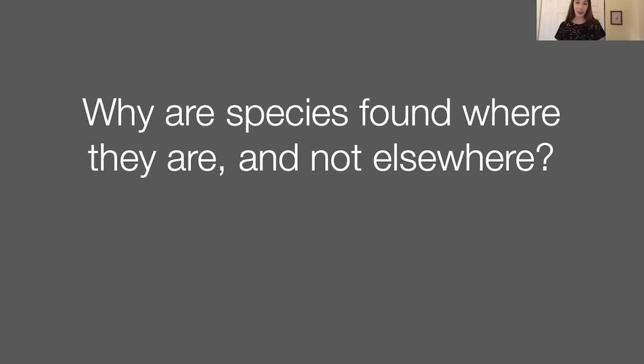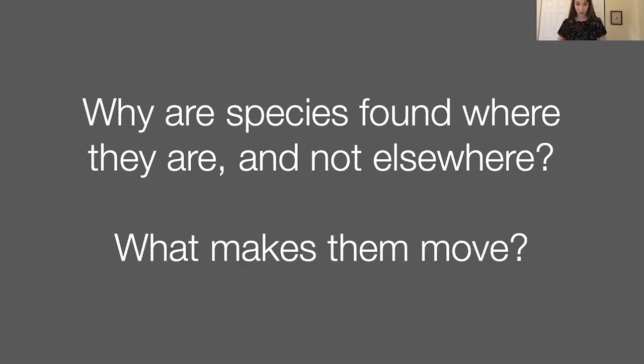The fundamental question I work on is why are species found where they are and not elsewhere? Why would any species have an equatorward range edge on land between the subtropics and the tropics? How are biogeographic boundaries maintained on land or in the oceans? This question has a twin, which is what makes species move? Species ranges are dynamic. They just move a lot generally.